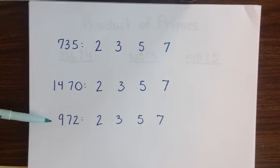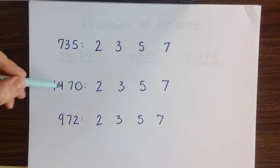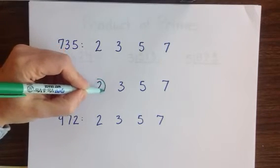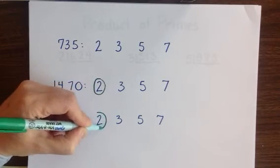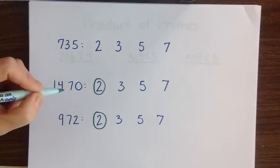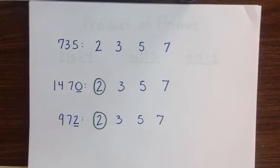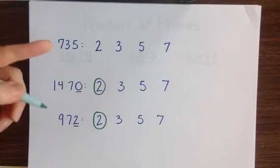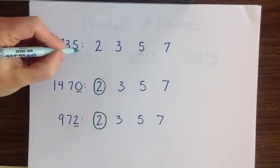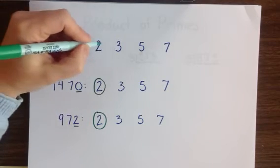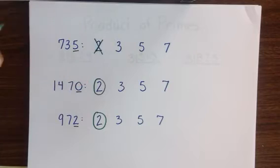So looking first at the rule for 2's, you'll notice that 1470 and 972 are both even numbers, since the 1470 ends in a 0 and the 972 in a 2. Now 735 ending in 5 is an odd number, so it's not going to be divisible by 2.